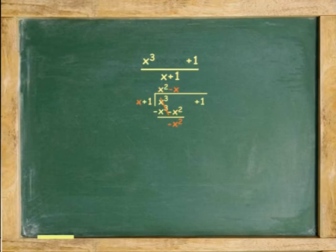Divide again. Negative x squared by x is negative x. Multiply negative x by x plus 1. You get negative x squared and negative x. Subtract. Cancel and bring the positive x down. This is the end of the second cycle.